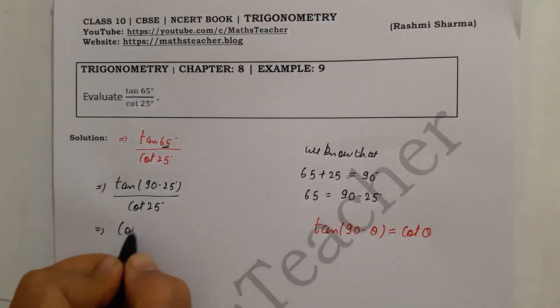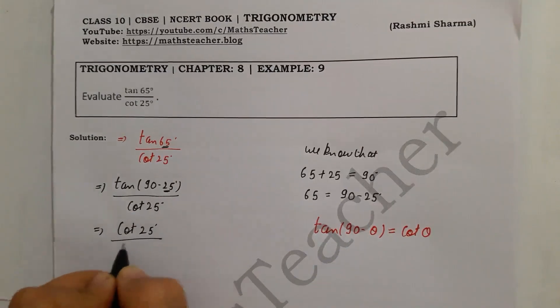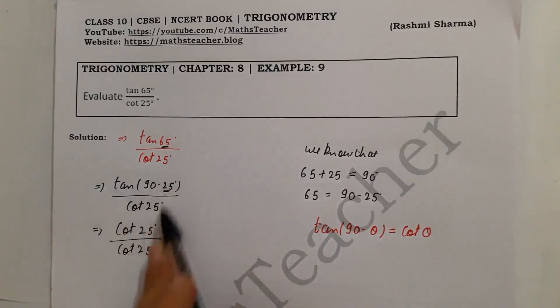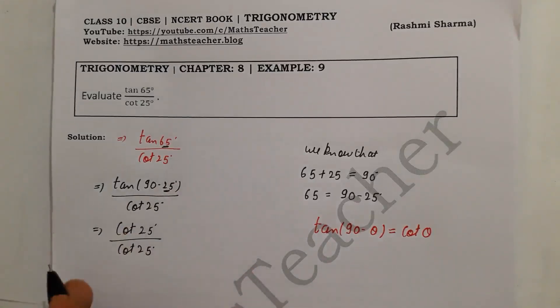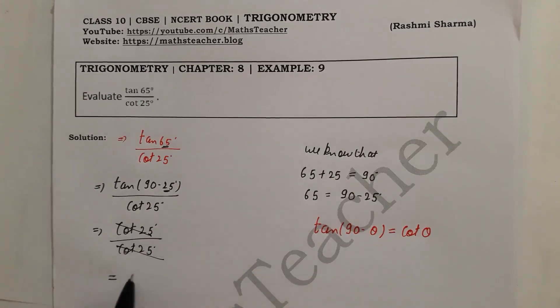tan(90° - θ) = cot(θ), so θ here is 25 degrees divided by cot(25°). We have changed everything in the numerator but have not done anything in the denominator. cot(25°) and cot(25°) cancel, so our answer is 1.